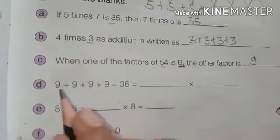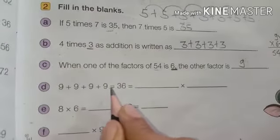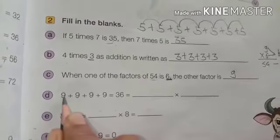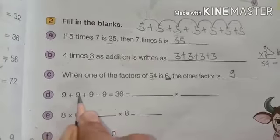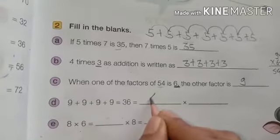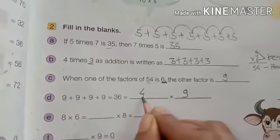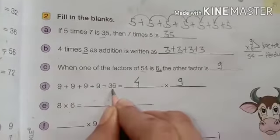9 plus 9, 9 plus 9 is equal to 36. Means we can write here what, how many times? Means 1, 2, 3, 4. 4 times what? 9's. Means 4 9's are 36.